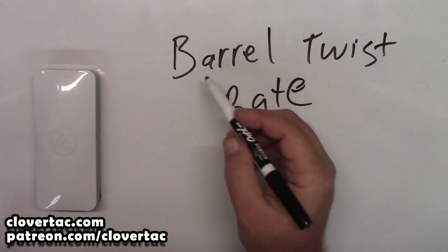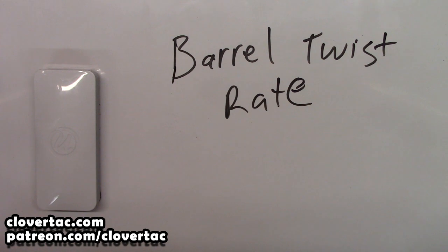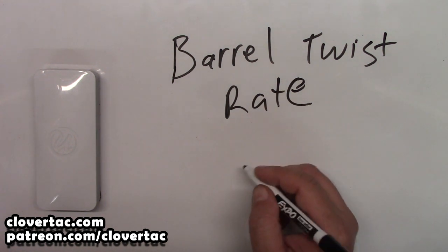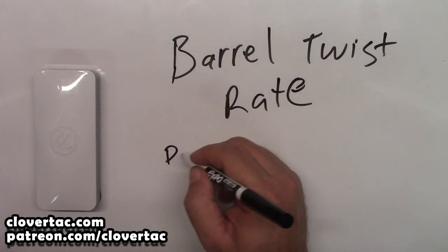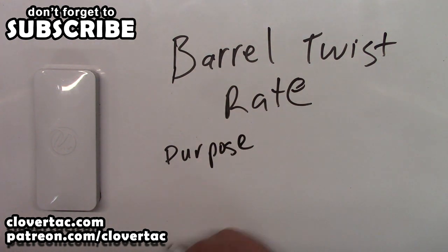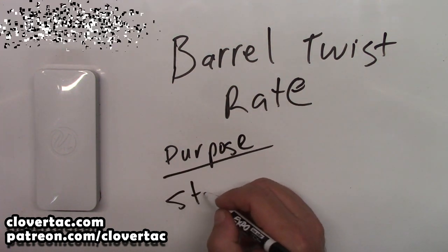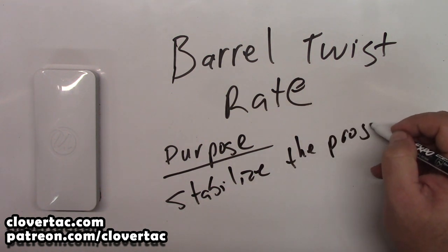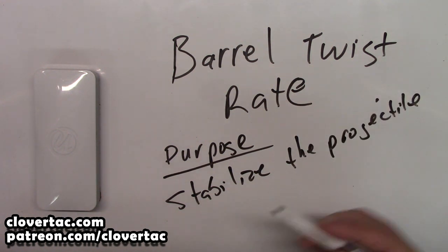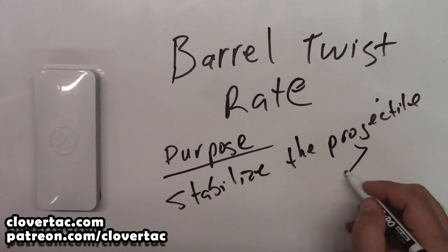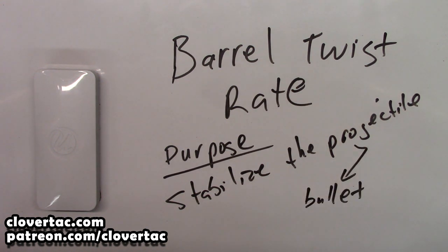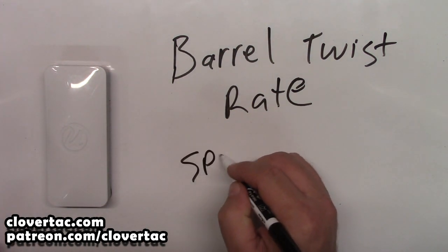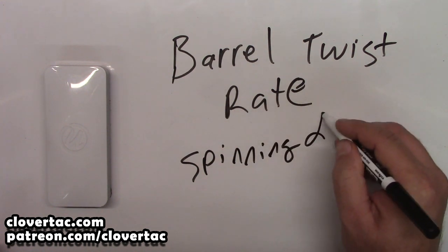Welcome back to the channel crew, and today we're going to try to explain in fairly basic terms barrel twist rate. Now the purpose of the barrel twist rate is going to be to stabilize the projectile. And if you're not familiar with that term, the projectile is the bullet. It achieves this stabilization by spinning the projectile down the barrel.